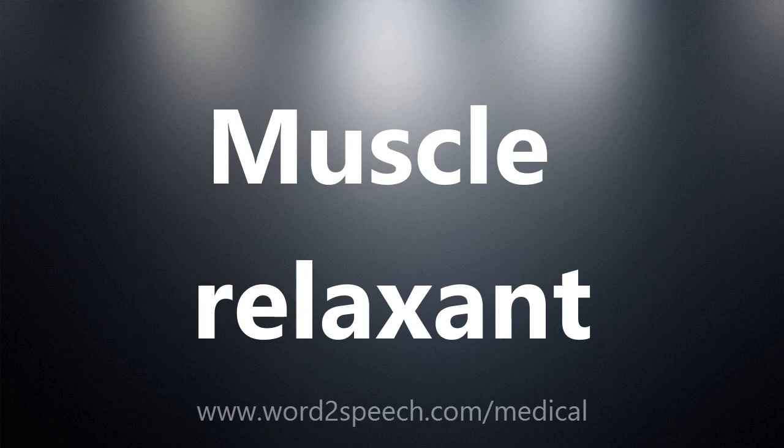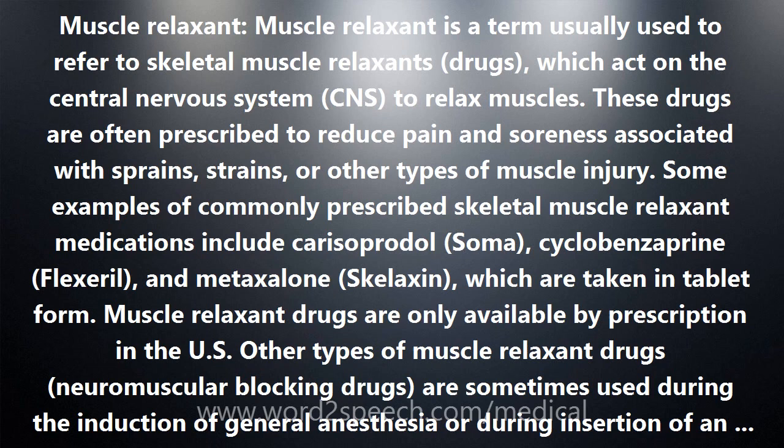Muscle relaxant is a term usually used to refer to skeletal muscle relaxant drugs, which act on the central nervous system to relax muscles. These drugs are often prescribed to reduce pain and soreness associated with sprains, strains, or other types of muscle injury. Some examples of commonly prescribed skeletal muscle relaxant medications include carisoprodol (Soma), cyclobenzaprine (Flexeril), and metaxalone (Skelaxin), which are taken in tablet form.